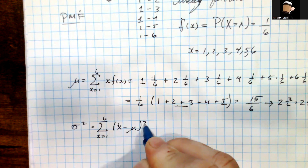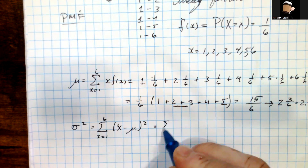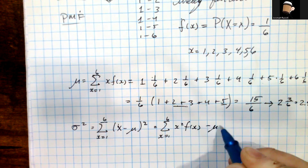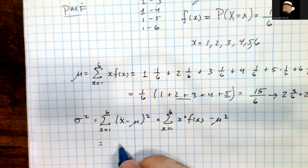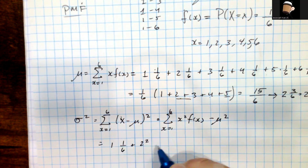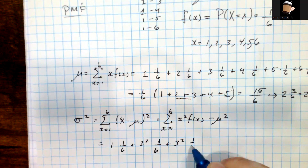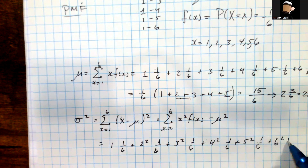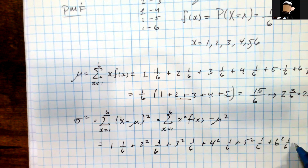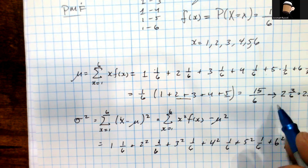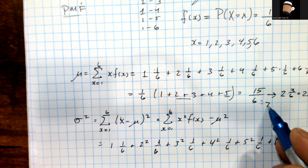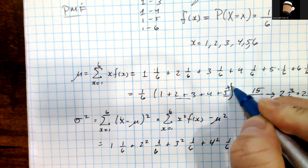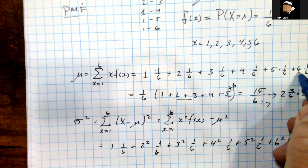Now for the variance, we use the simplified formula: the sum from x = 1 to 6 of x² times f(x), minus mu squared. Computing this: 1²·(1/6) + 2²·(1/6) + 3²·(1/6) + 4²·(1/6) + 5²·(1/6) + 6²·(1/6), then subtract the mean squared. Wait — I notice I forgot to include the plus 6 in my sum for the mean earlier. That's what made the result seem oddly small.